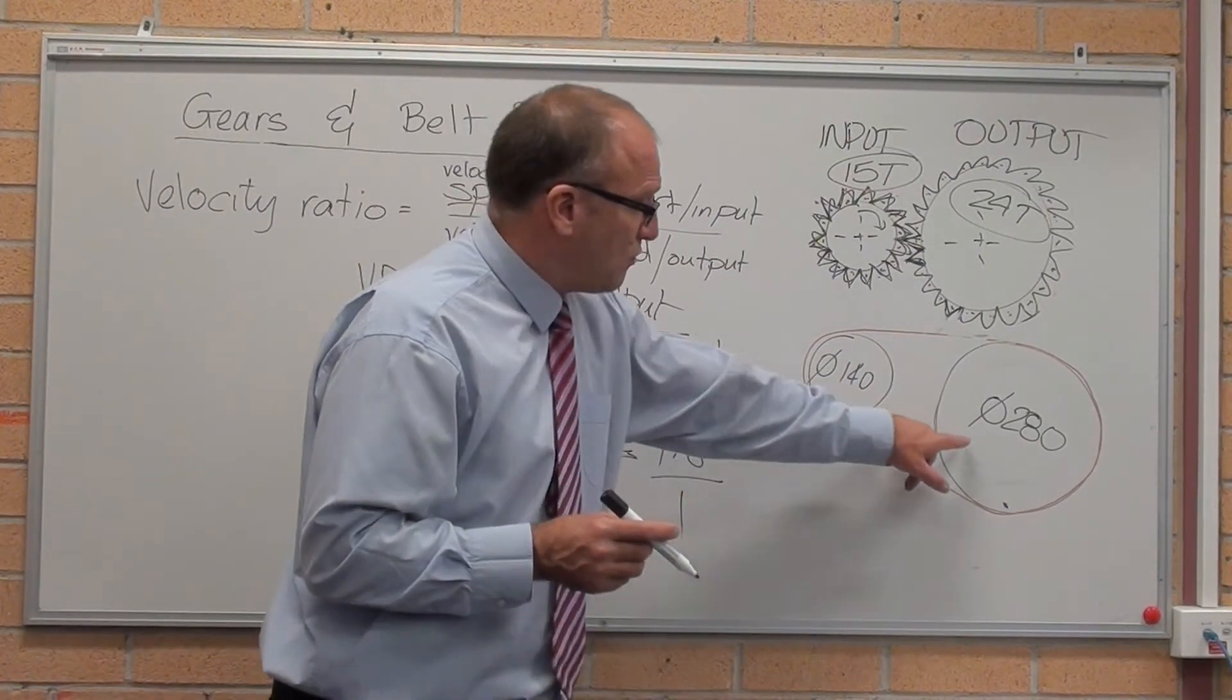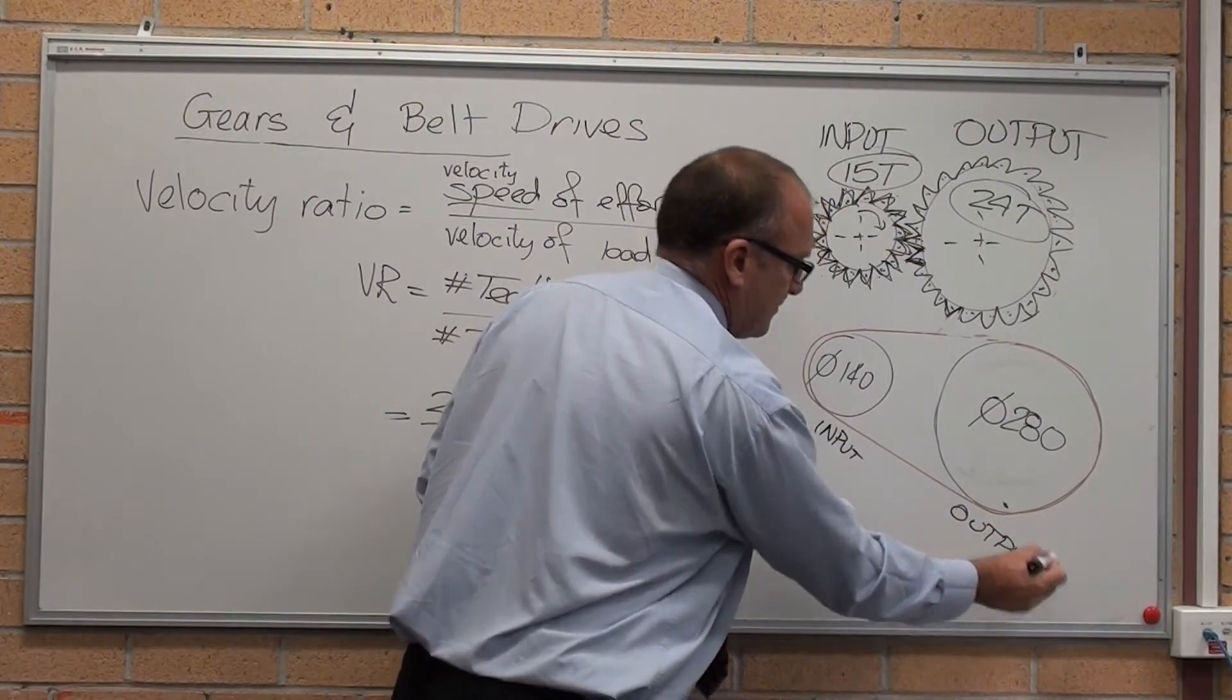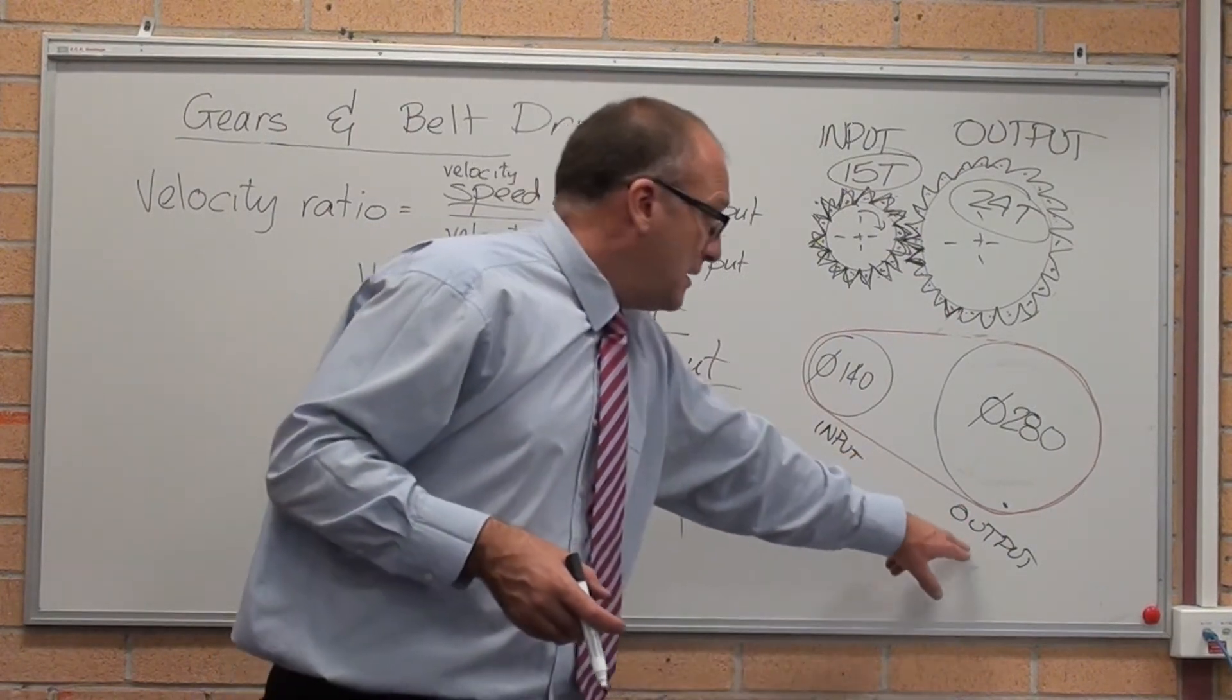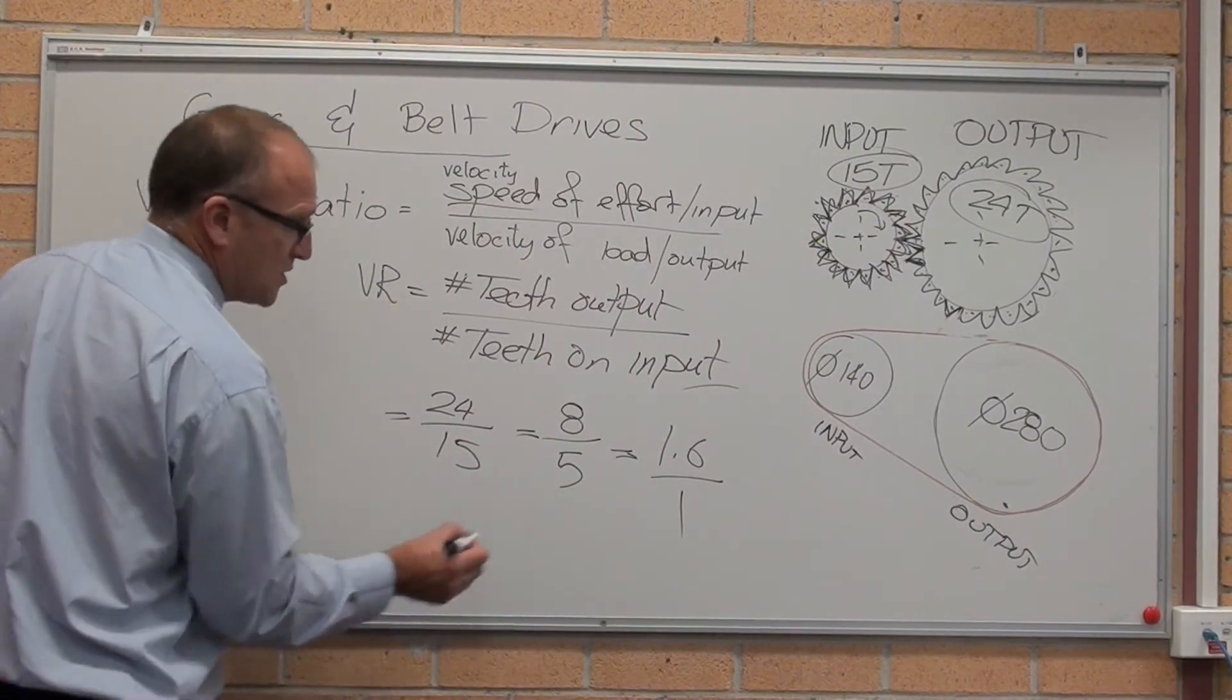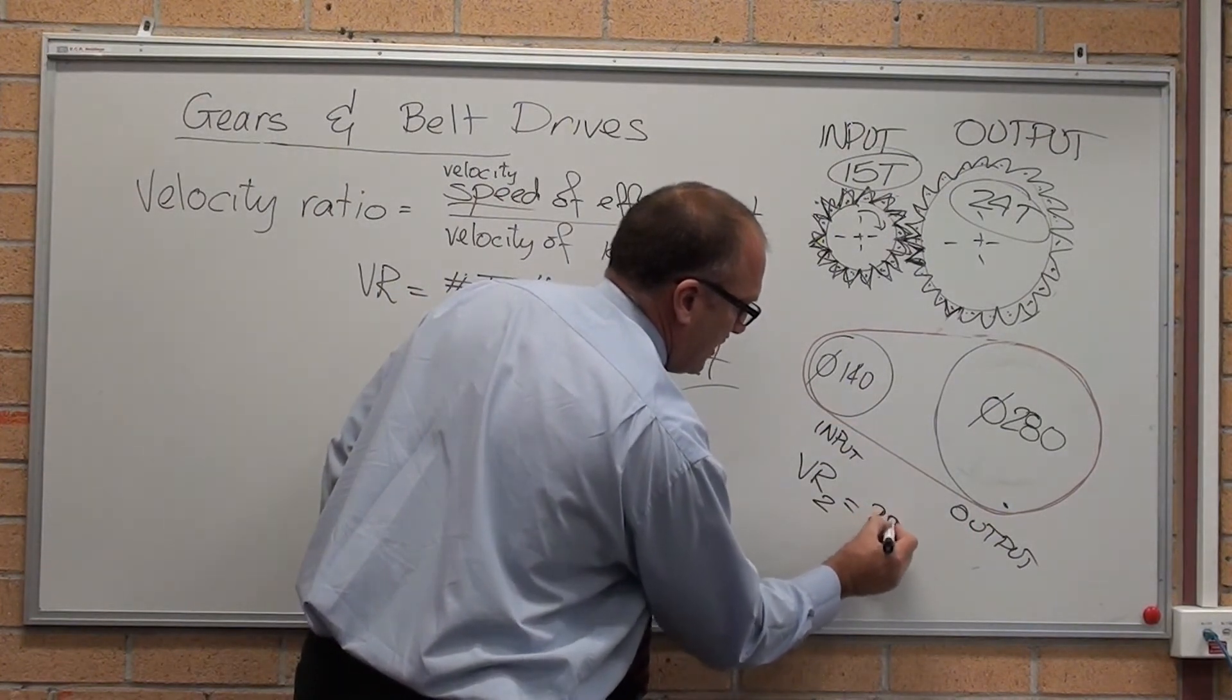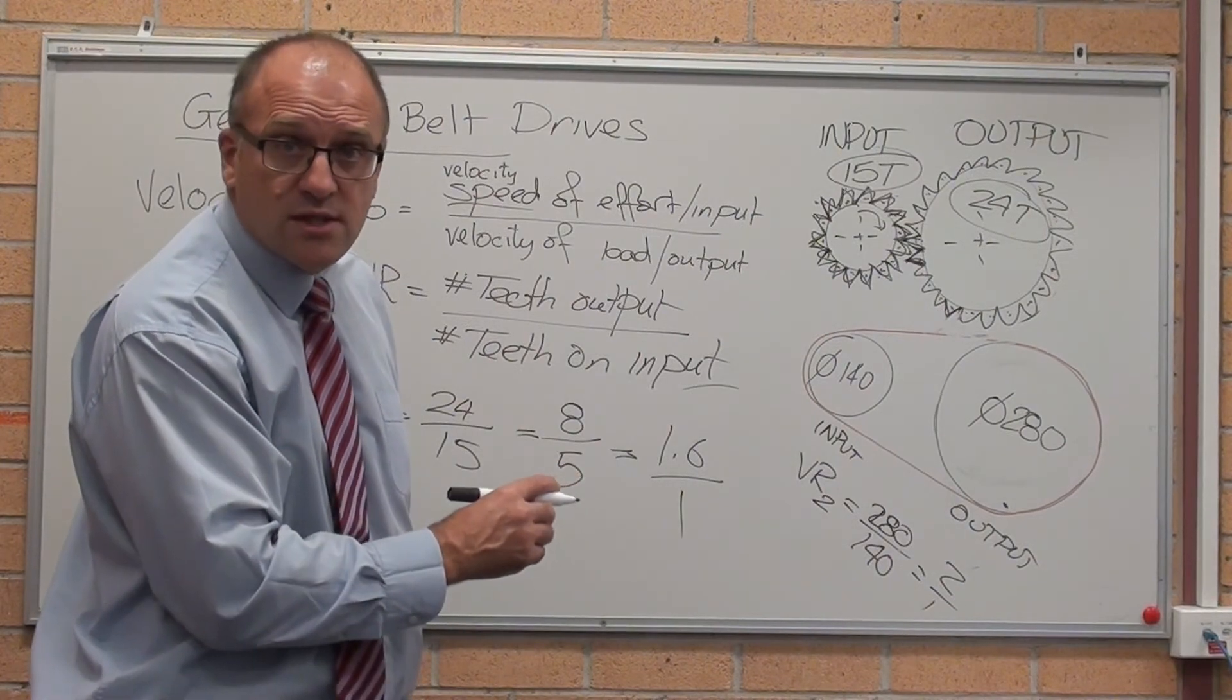To get this belt drive system, it is the input, output. The velocity ratio, the effort is driving faster than the output, or rotating faster than the output. Velocity ratio 2 equals 280 divided by 140 equals 2 as to 1. That's your velocity ratio of the belt system.